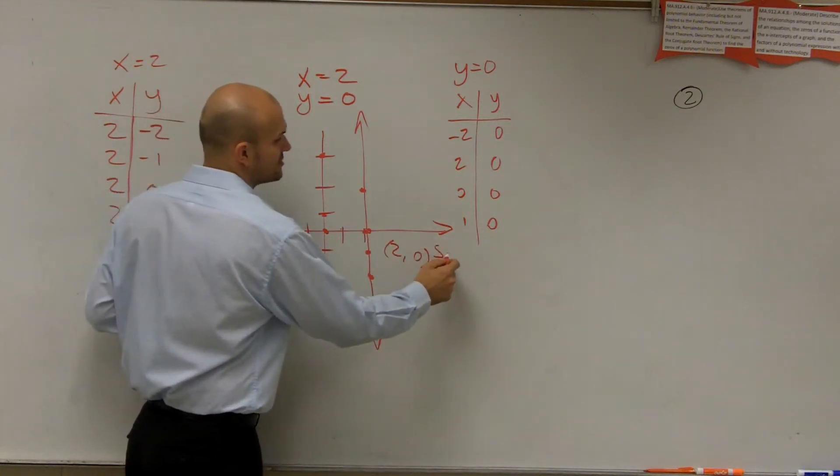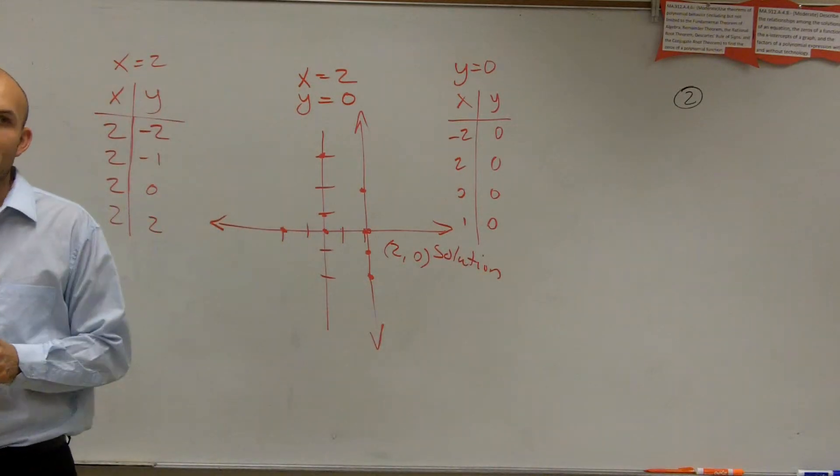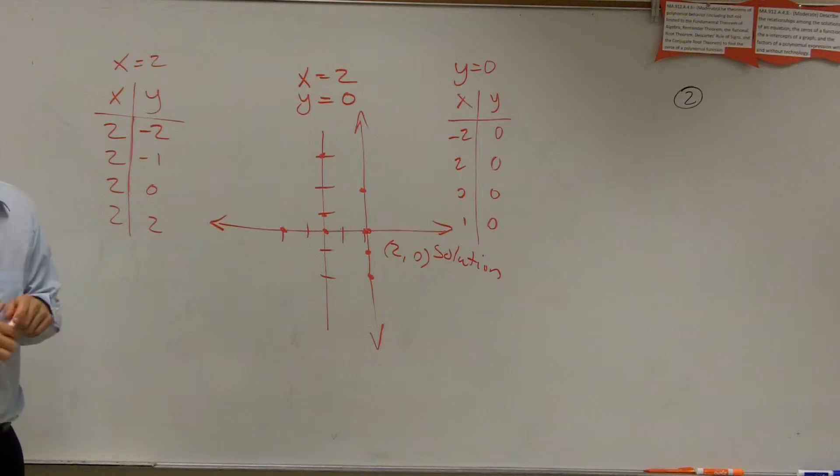And you can see they intersect at the point 2 comma 0. So that is going to be your solution. Make sure you guys write that in. We want to write our solution in coordinate point form, where they intersect, correct.